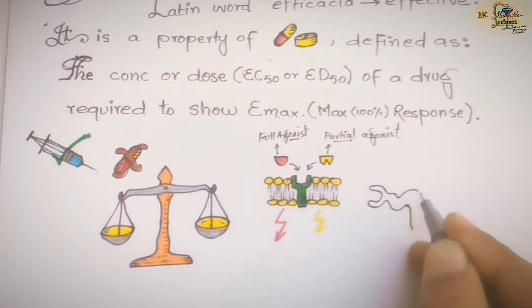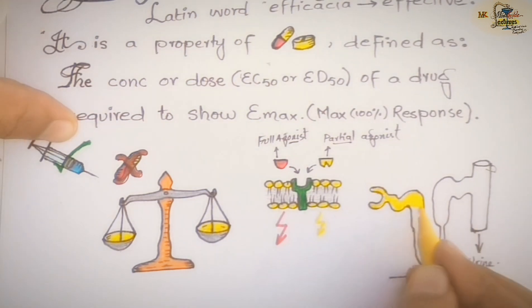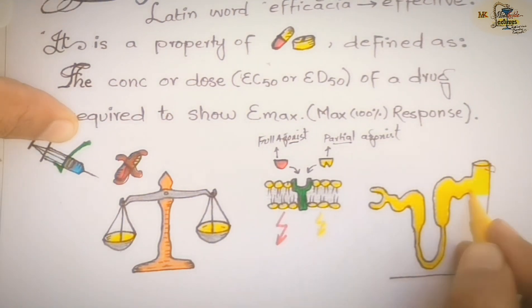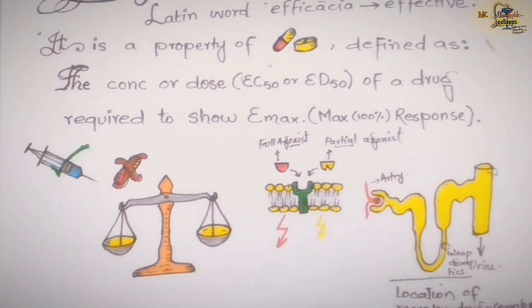And moreover, it also depends upon the drug receptor complex location. For example, loop diuretics are more powerful than the other diuretics. It also depends upon the drug dosage form in which the drug is given.